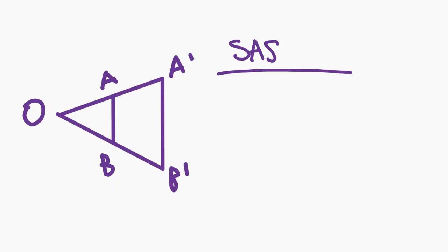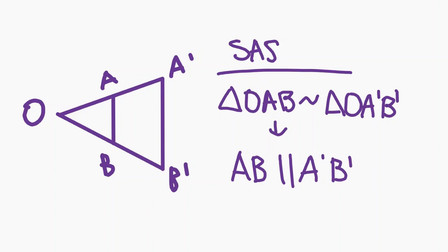By SAS similarity, we have that triangles OAB and OA prime B prime are similar. What follows from this is that segments AB and A prime B prime are parallel. Thus, homothety can be useful for parallel segments.